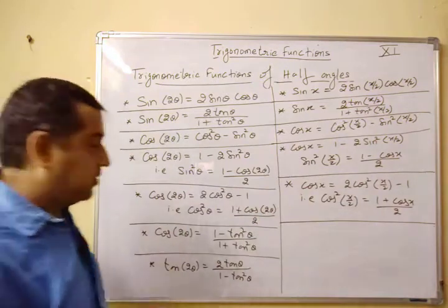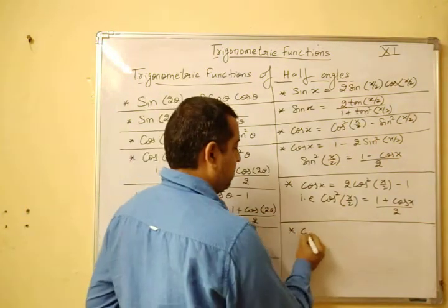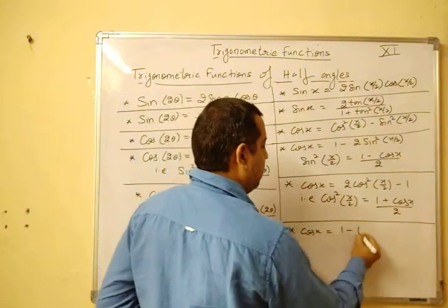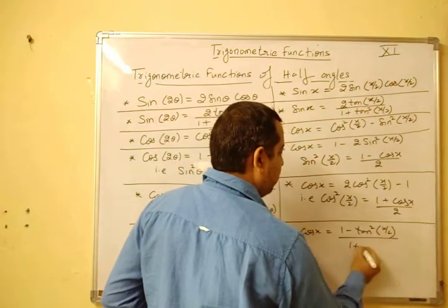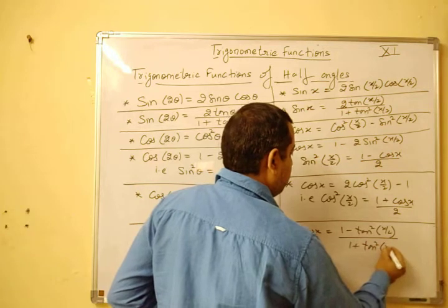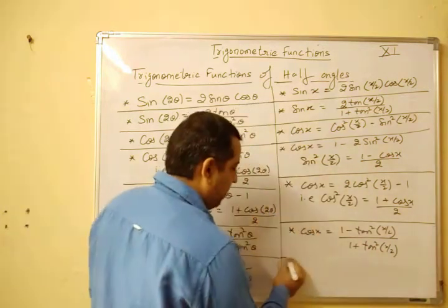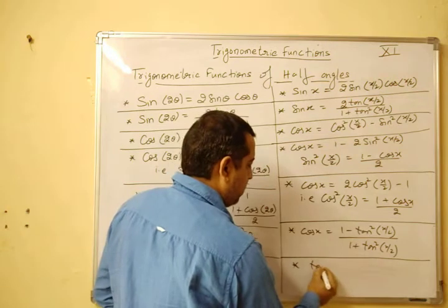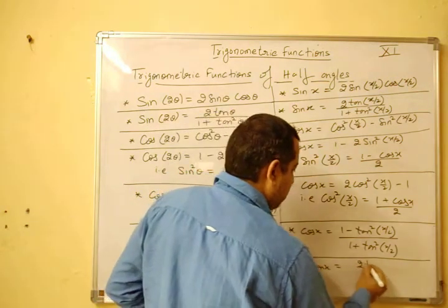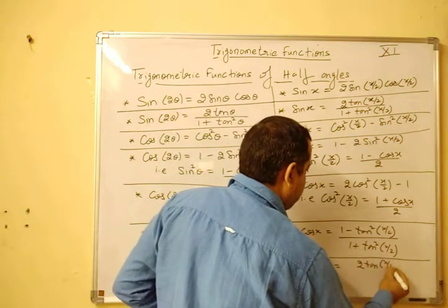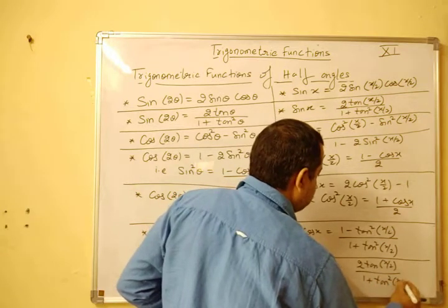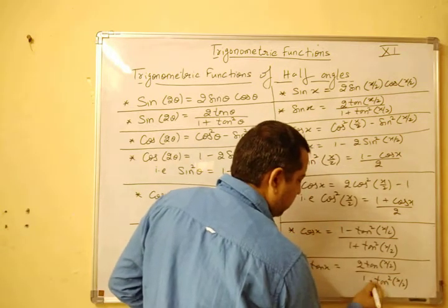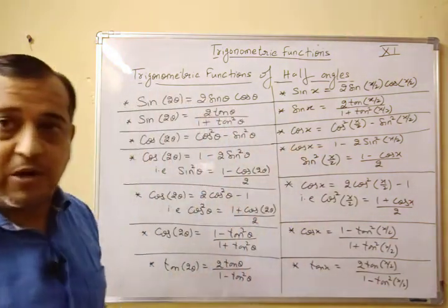Then the formula of this, cos of x is equal to 1 minus tan square x by 2 upon 1 plus tan square x by 2. And your last one is tan of x, this is equal to 2 tan x by 2 upon 1 minus tan square x by 2.